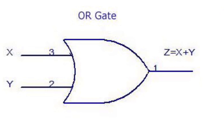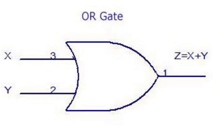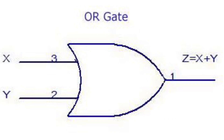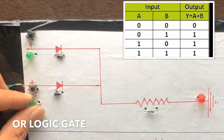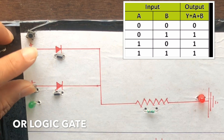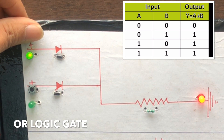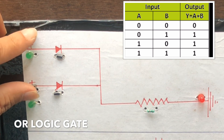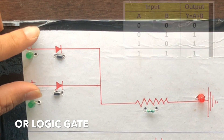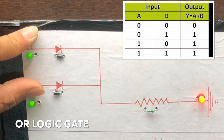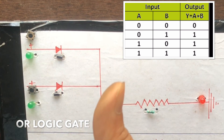Today's video is about all logic gates - it is a very simple science project. First we will understand its symbol and its truth table. As you can see here, there are two inputs and one output. When we give input to the A terminal we get output, and when we give input to the B terminal we also get output. If we give input to both terminals A and B, we also get output. So let's make this project.